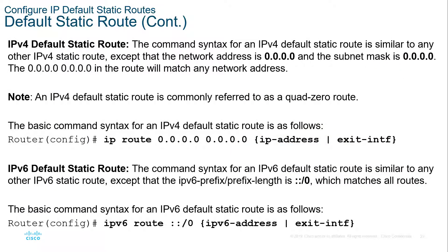So how do we do it? We do static routes using quad zeros. For IPv4, we do IP route 0.0.0.0 0.0.0.0, and again we either give it the exit interface or we give it the next hop IP address. For IPv6, we do a double-colon forward slash zero. That says match — I have no other matching addresses in the route table — so this will match and send to or leave out this interface.